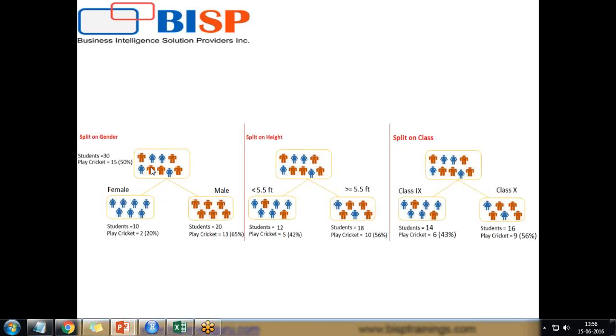In future, if a new student joins the class and we want to decide whether that student will play cricket or not, we first check if the student is male or female. If male, we ask whether he plays cricket. If we split based on height or class, we put them in the respective categories and get the desired output.